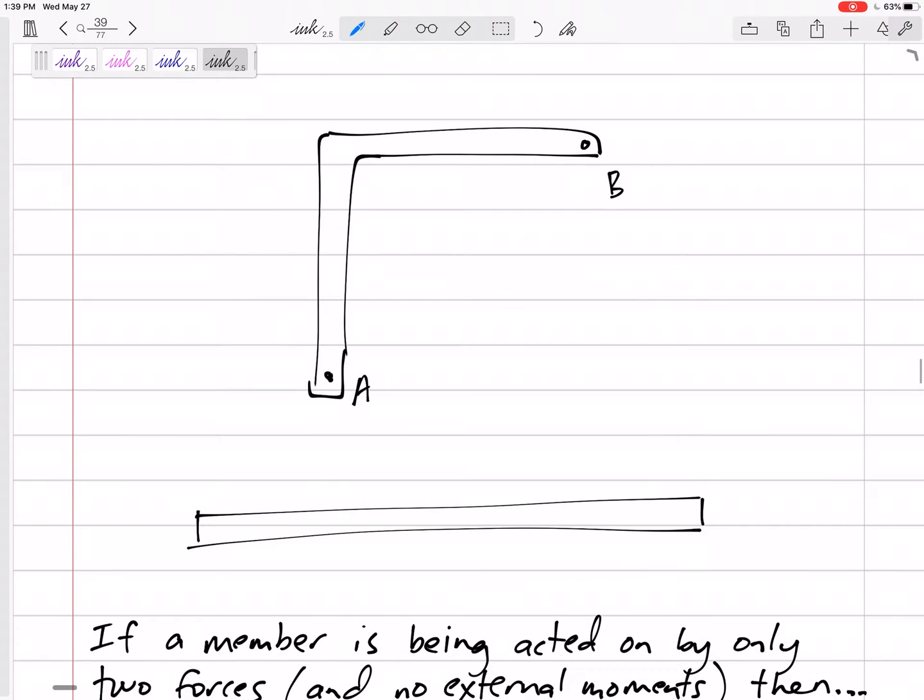So I'm thinking the sum of the forces needs to be zero, so maybe I've got 10 Newtons here and 10 Newtons here. The sum of the forces in X equals zero, the sum of the forces in Y equals zero, but the sum of the moments would not be equal to zero.